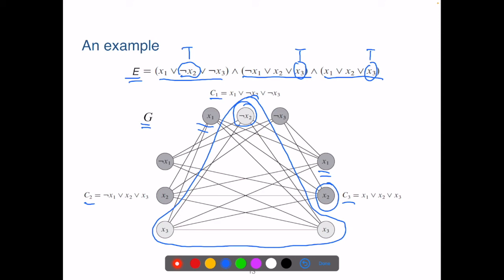When E is satisfiable, we know that at least one variable in each of the three clauses of E can be true.